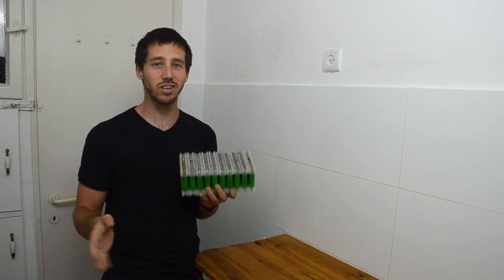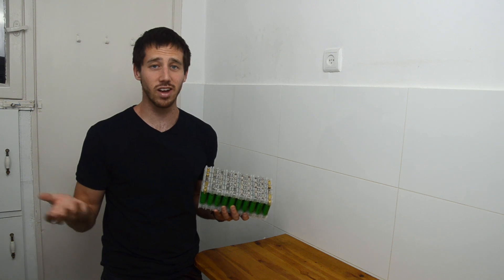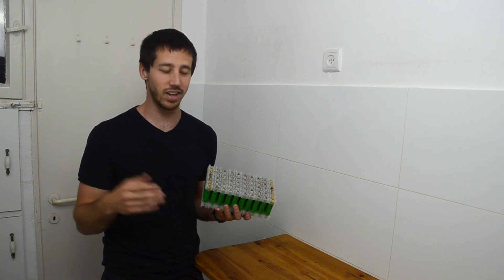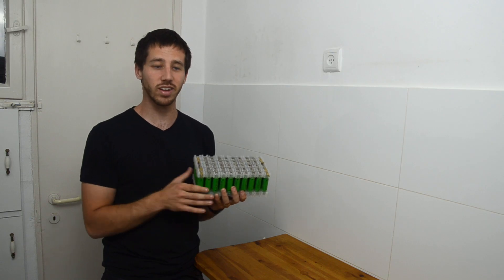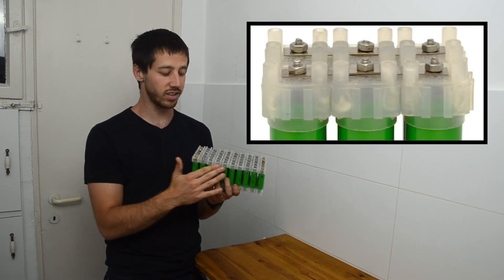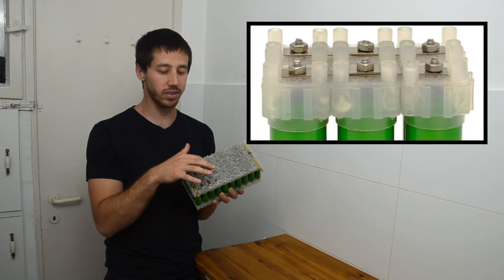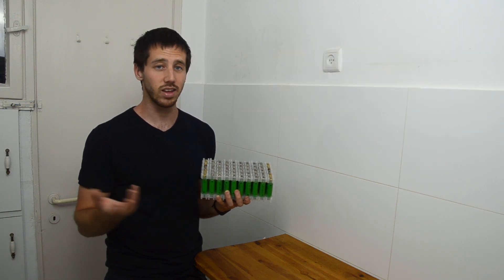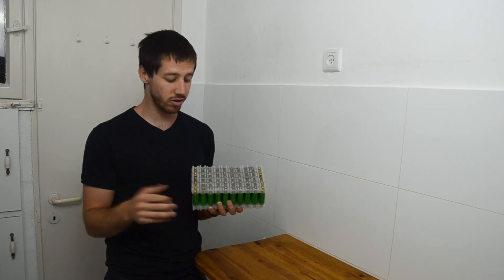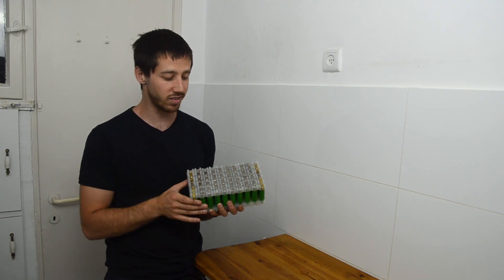Now the nice thing about this kit is that you don't need a spot welder. Technically you don't even need a soldering iron unless you want to add a BMS later. The cool thing is that instead of using a spot welder to join these cells together, the kit comes with these plastic caps that are then bolted together as you can see here. So you don't need a spot welder, really the only tool you need is a socket driver to turn these 5.5mm nuts.